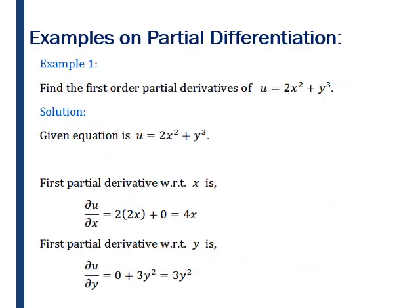Now we see some examples. Find the first order partial derivatives of u is equal to 2x square plus y cube. Now first partial derivative with respect to x — when we find this, we will keep variable y as constant. So del u by del x is equal to 2 into 2x plus 0. As we are keeping y constant, the differentiation of y cube will be 0. So ultimately, the first derivative del u by del x is equal to 4x.